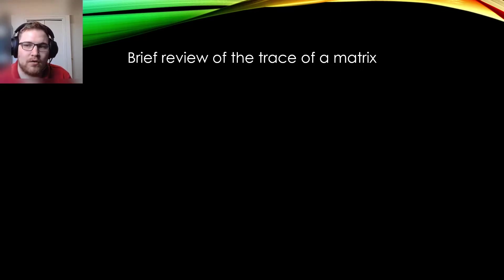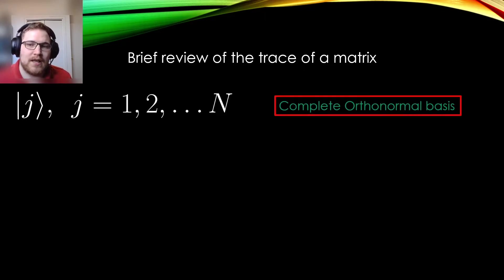So now that we have covered the basics of quantum mechanics, let us briefly review some properties of the trace of a matrix. Suppose I give you a basis of states labeled by J that form a complete orthonormal basis. Then I write the trace of a matrix A in the following way.